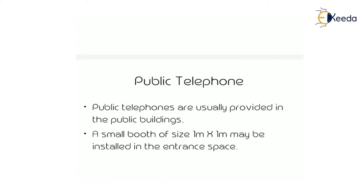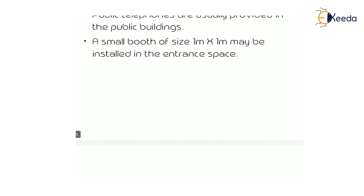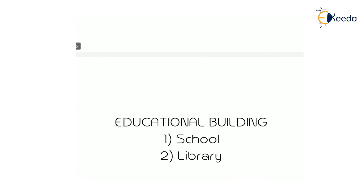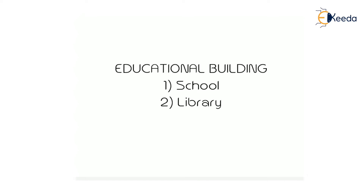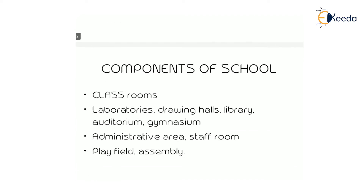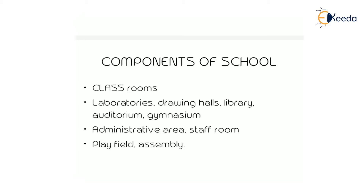Public telephones are usually provided in public buildings. A small booth of size 1m×1m may be installed in the entrance space. Now we see the first type: educational building, which includes school building and library building. The principles of planning for a school building are: built-up area should not exceed 25% of the site area; the remaining 75% of land is to be used for sports fields and gardens; and the minimum clear height of any building should be 750mm.